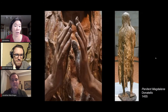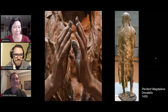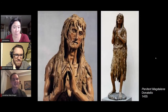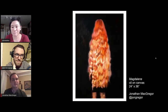We've got Donatello's sculpture of the Penitent Magdalene here. If you haven't seen it, it's a striking piece in Florence. I was so happy to find the photo on the right, Jonathan, because it's so similar in showing the length of the hair, which is characteristic of Mary Magdalene. From a history point of view, she's all over our history. So Alex, what's your take?